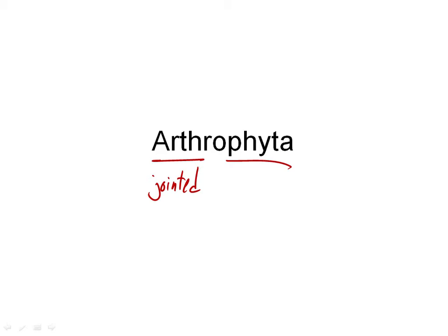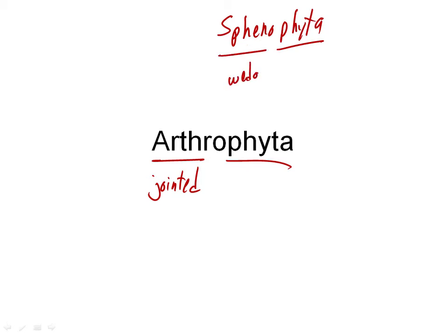The other name, Sphenophyta — Phyta is the division name, and spheno means wedge. This is a reference to the shape of the leaves. The leaves are very small, but they are wedge-shaped. Because the leaves are so small, you really can't tell they're wedge-shaped in most cases, so the Sphenophyta name has tended to fall out of favor.